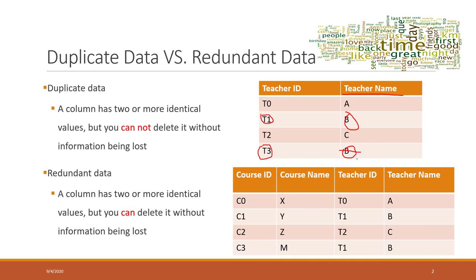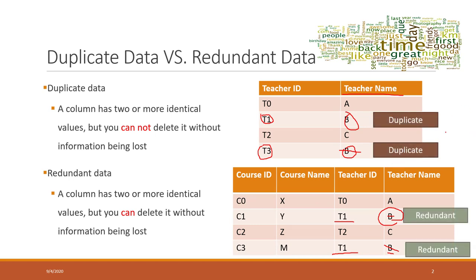For redundant data, if we have a teacher name column with identical values that both refer to the same teacher t1, then deleting one row still leaves us knowing the name of t1 from the remaining row. That is called redundant. For duplicate data you cannot delete the records because you will lose information, but for redundant data you can safely delete records without losing information, and it is recommended that you eliminate redundant data to keep your database more efficient.